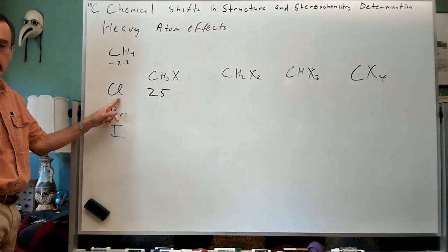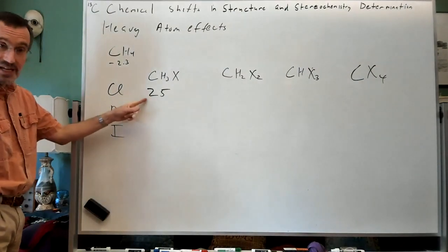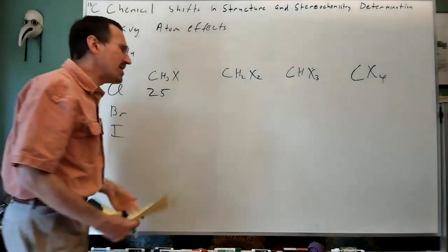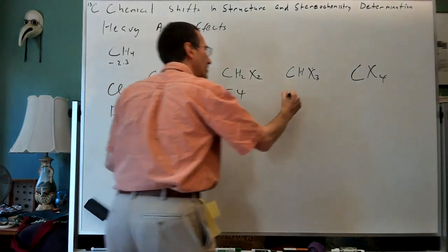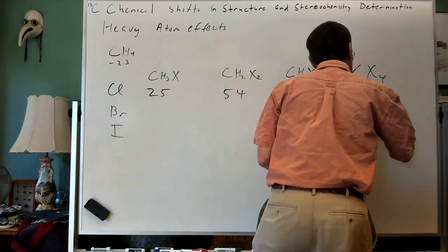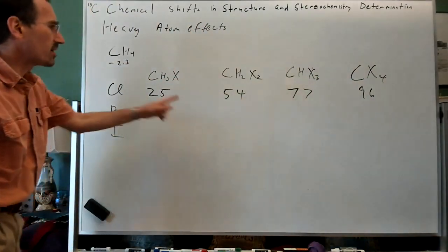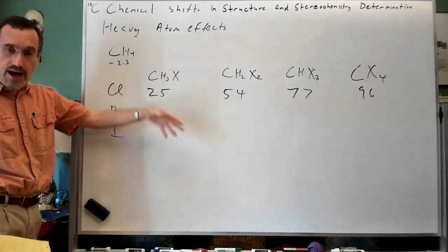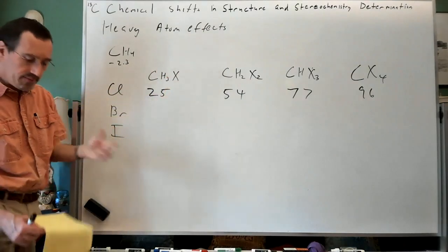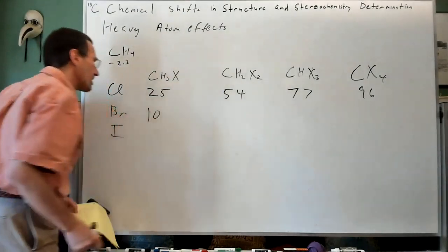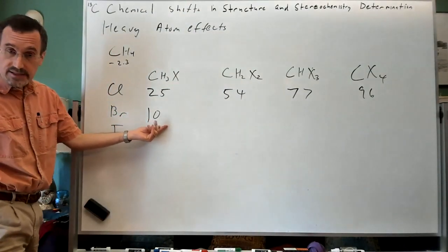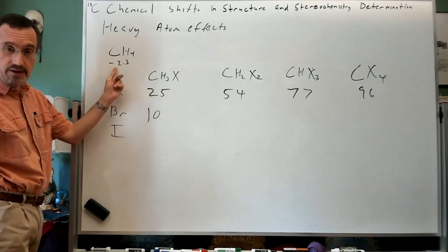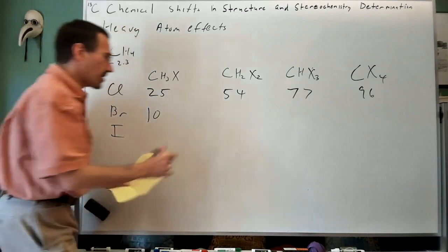For chlorine — which isn't really a heavy atom — the effects aren't surprising: chlorine is electronegative and pulls electron density away from the carbon, shifting it downfield. We see 25 ppm for one chlorine, 54 for two, 77 for three (chloroform), and 96 ppm for carbon tetrachloride. For bromomethane at 10 ppm, bromine is less electronegative than chlorine, so you'd say okay, 10 ppm downfield from methane — add another bromine, you're at 21 ppm — still moving downfield.